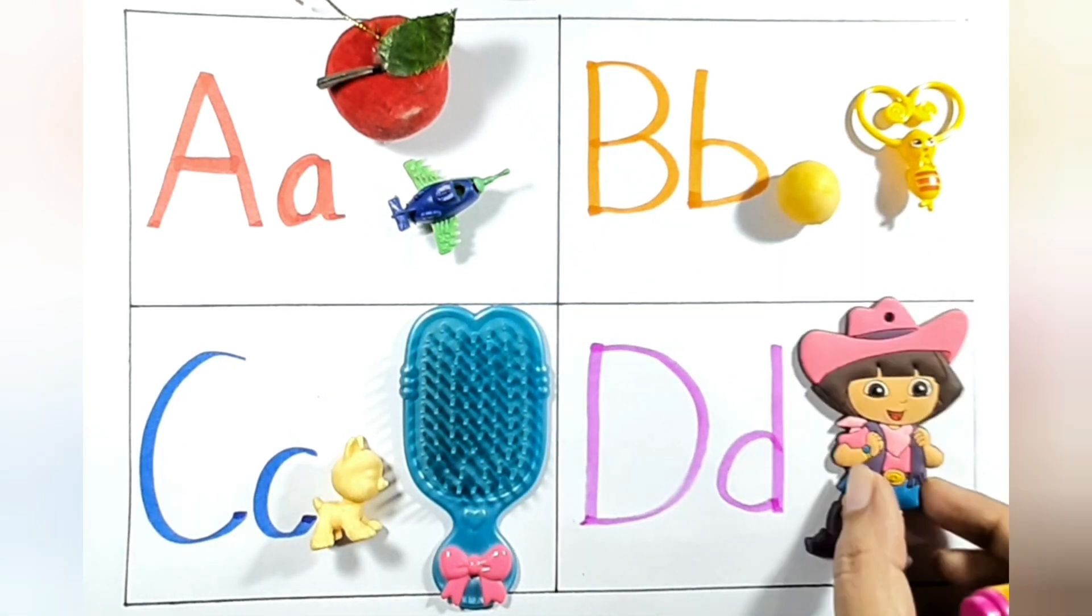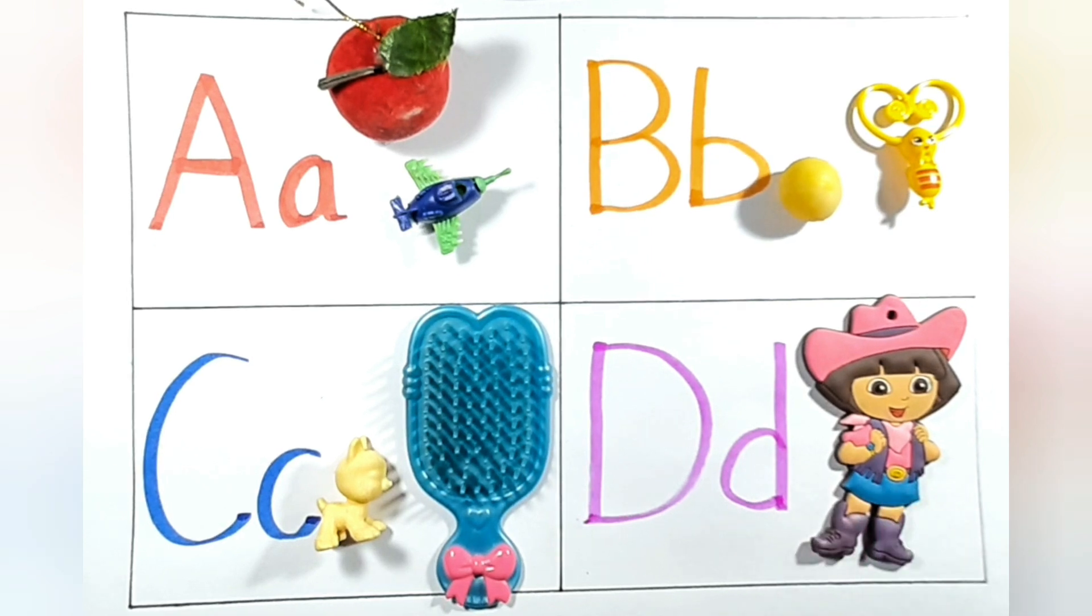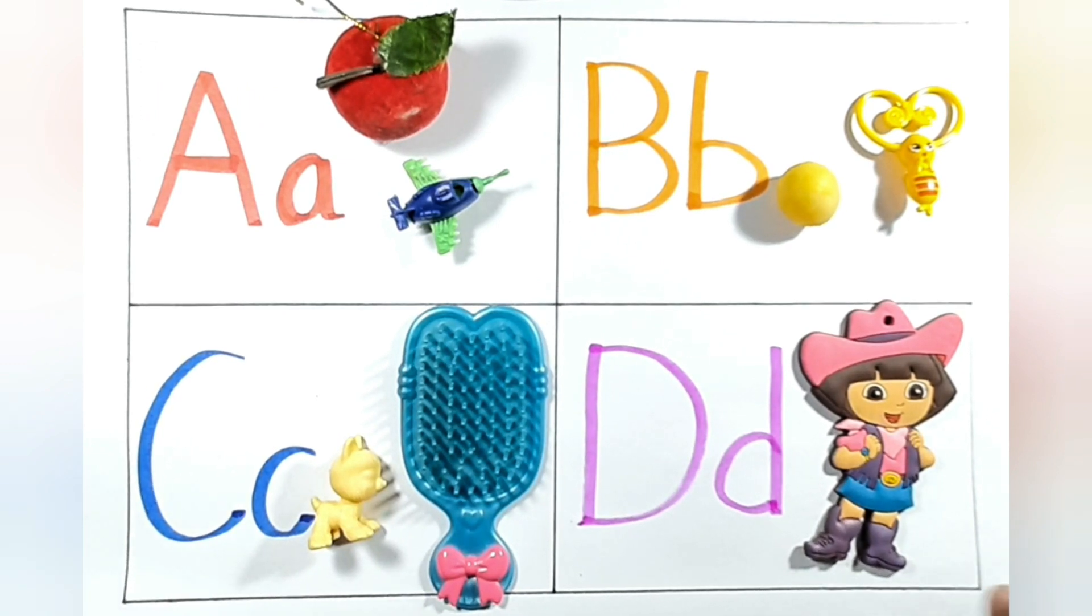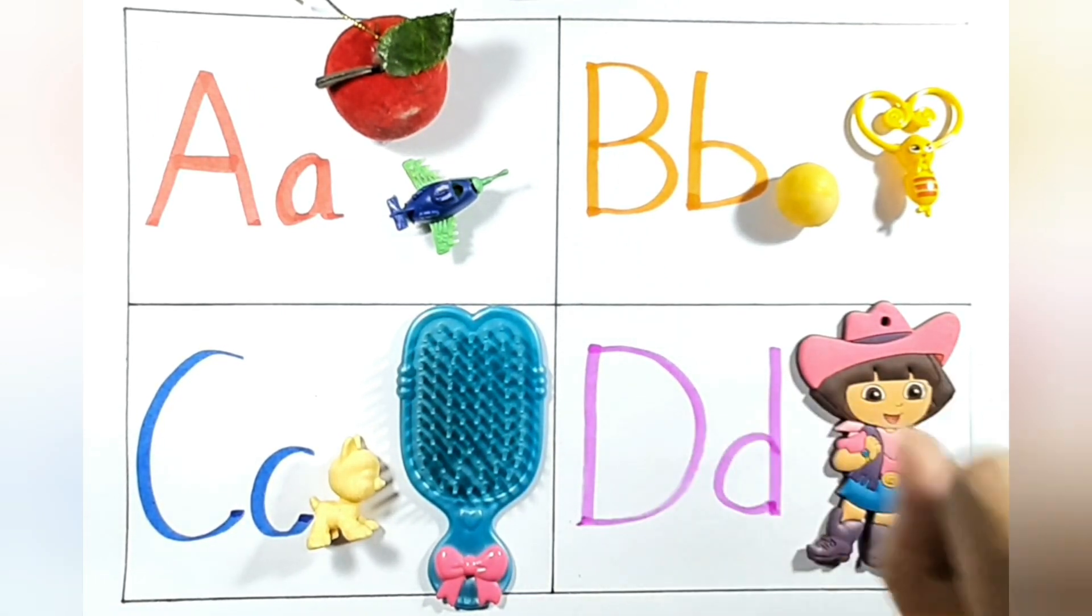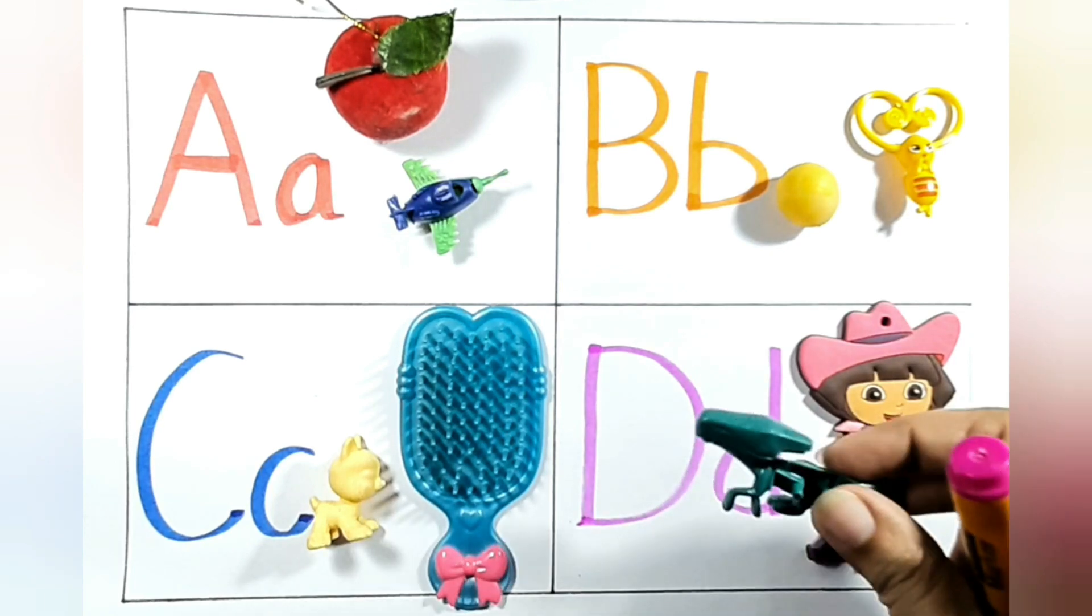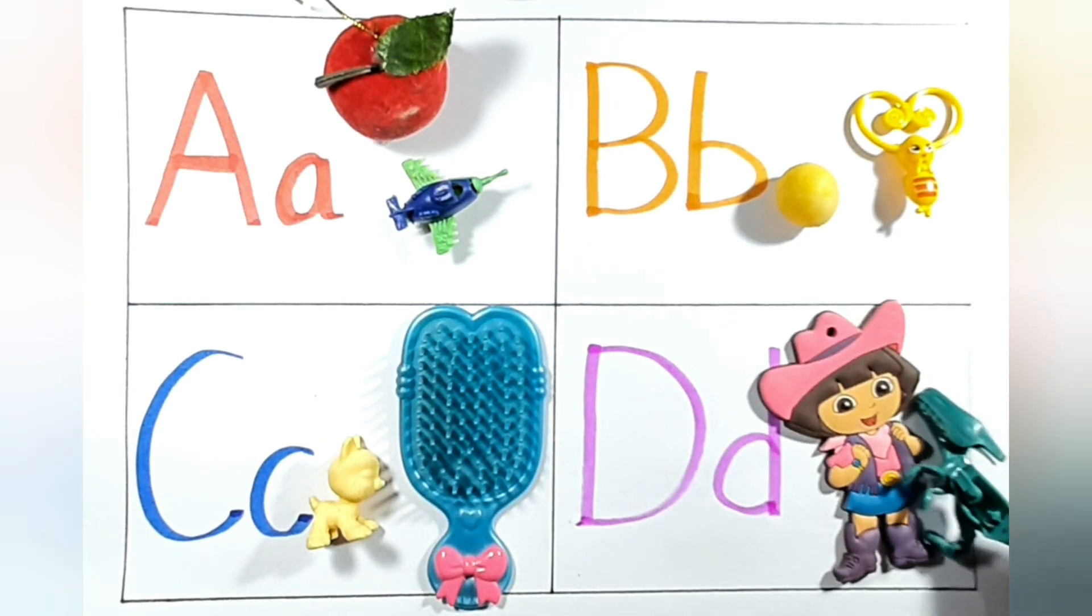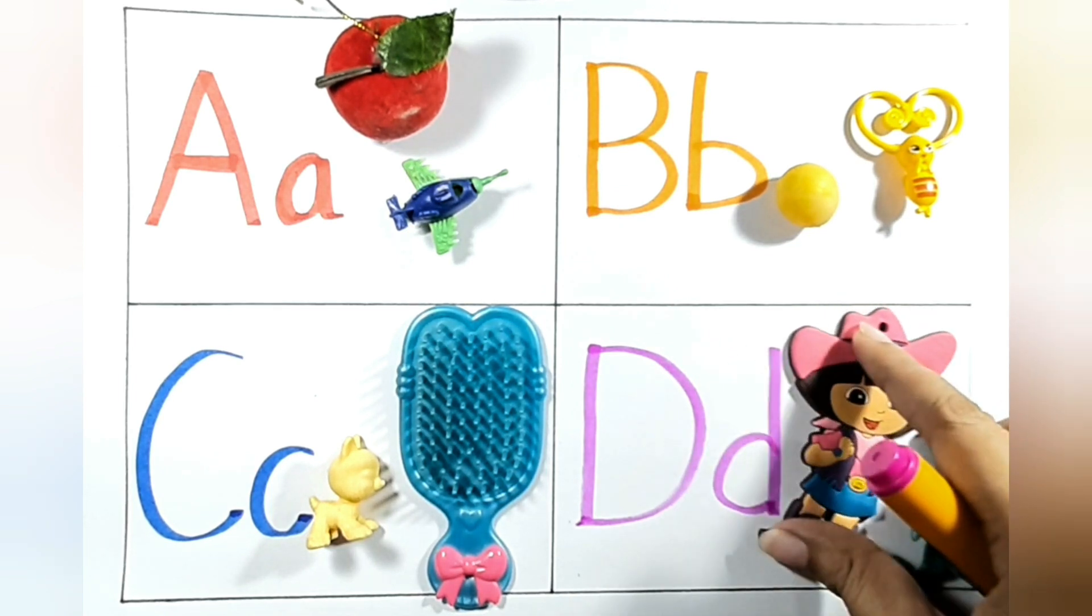This is Dora. D for Dora, very nice. What is D for? Something else I can show you. One more object with D starts. Here it comes. Tell me what it is. It's a dinosaur. D for dinosaur, D for Dora.